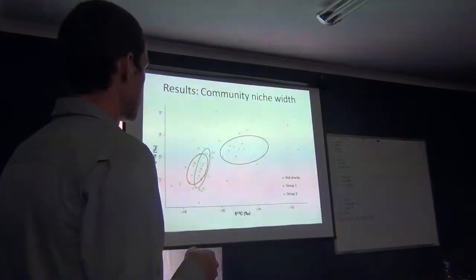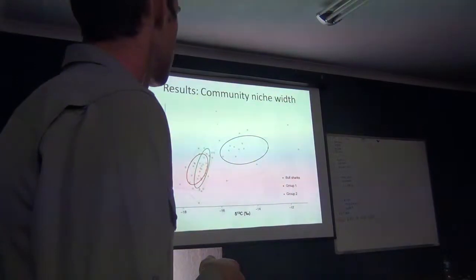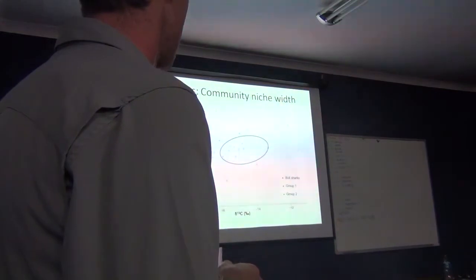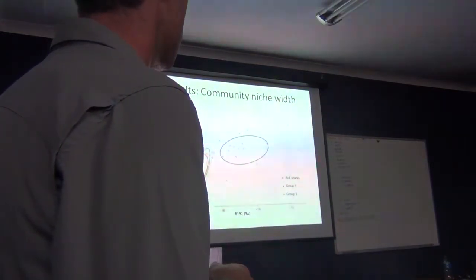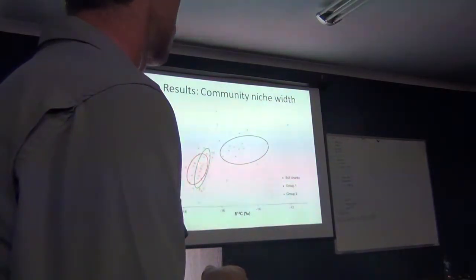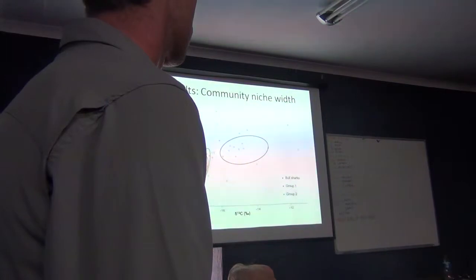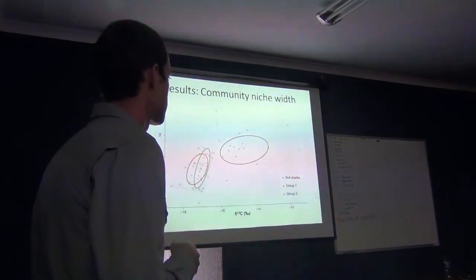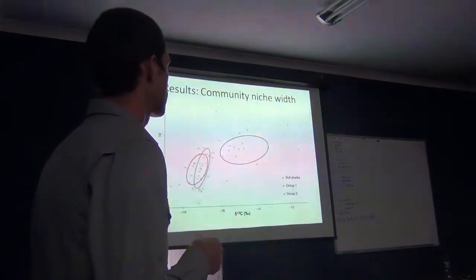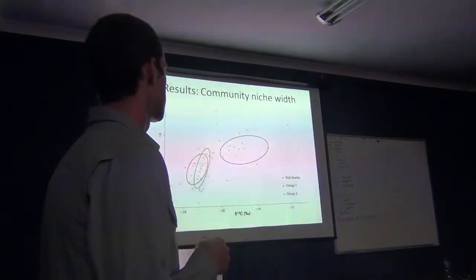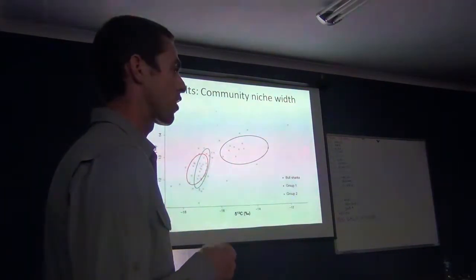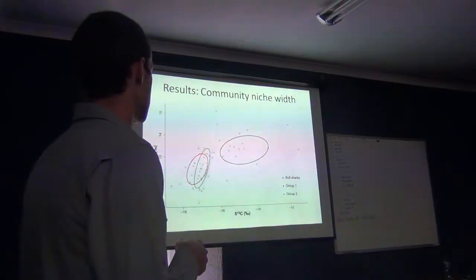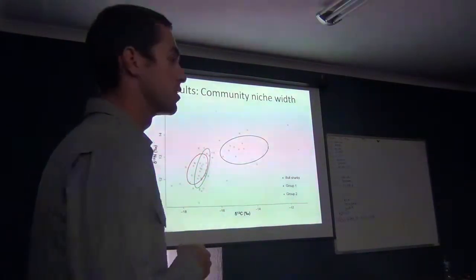Interestingly, the bull shark component has significantly wider niche widths than the fish component. This represents a slightly higher trophic position than the teleost fish component, but more interestingly, they have a much broader carbon signature. As a sample population of bull sharks, this suggests they are capable of sourcing their dietary items over a much broader range or geographical area, as opposed to the teleost component, which is more likely sourcing dietary items over a very limited geographical area.